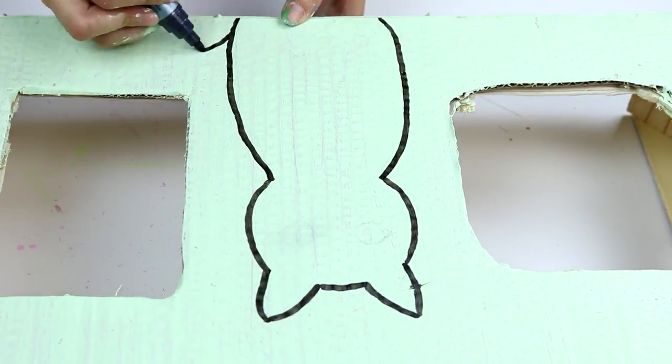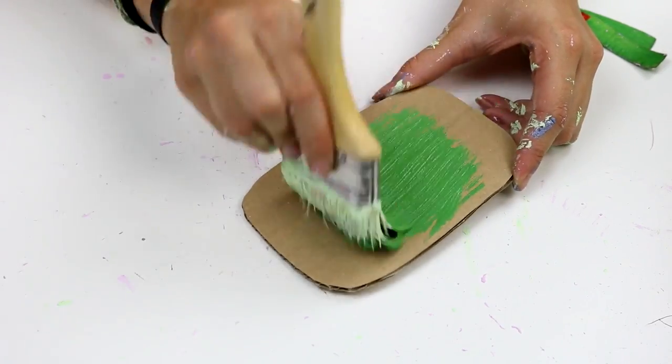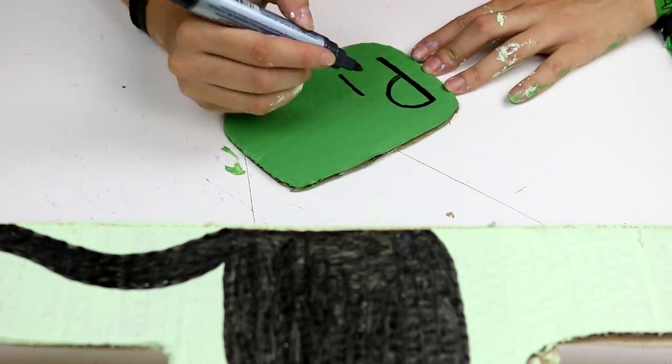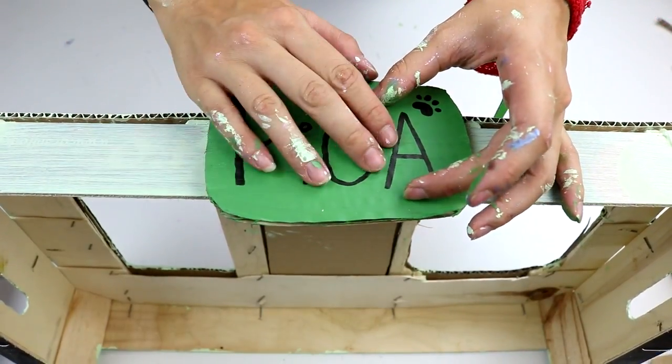If you prefer, you can also draw the design by hand. Once you have finished painting the feeder, get a piece of cardboard like this one and paint it too. When it dries, you can write your cat's name on it and stick it on the front part like this.